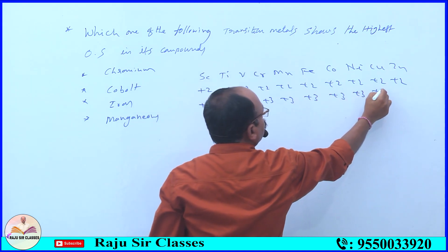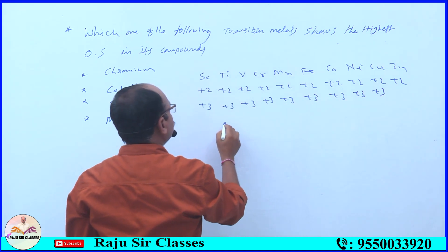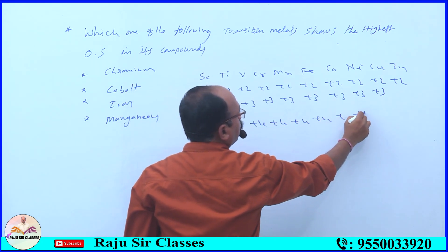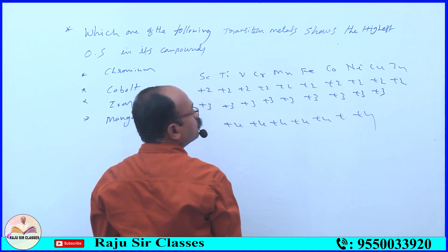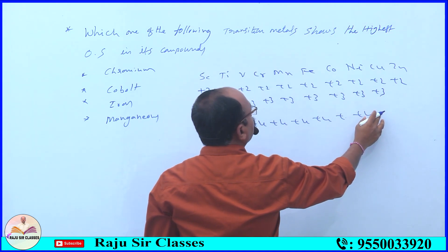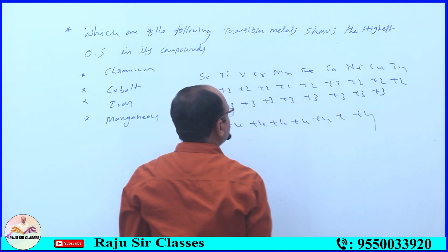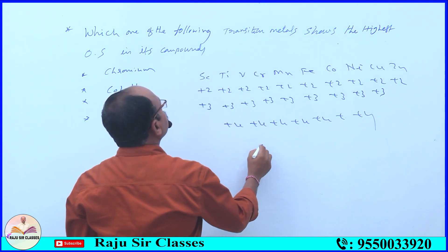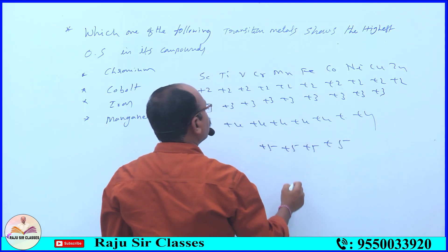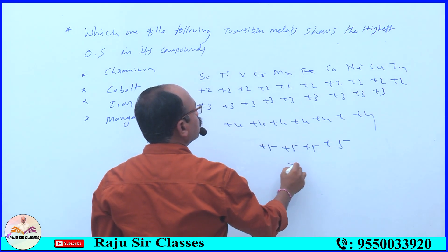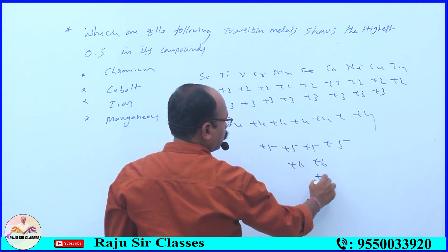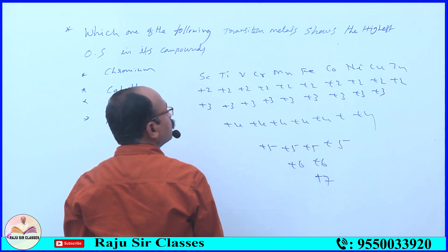The oxidation states go: plus three, plus four, plus five, plus six, plus seven. The last element in the counting reaches plus seven.